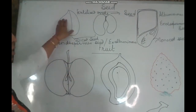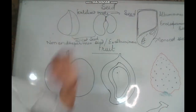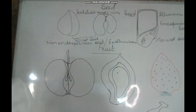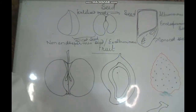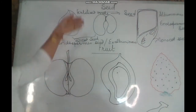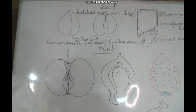So the cotyledon and endosperm are the source of nourishment for the growing seedling. And not only for the seedling — these are the source of food for us and for animals also. These are the basis of agriculture.